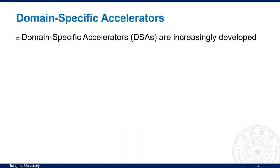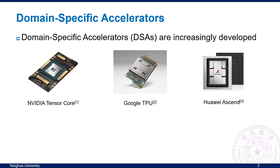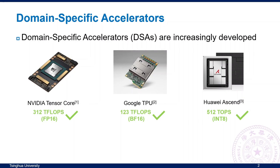In recent years, domain-specific accelerators have developed rapidly. DSAs can provide higher performance by mining the computation patterns of specific domains. For example, some DSAs target the machine learning domain, such as NVIDIA Tensor Core, Google TPU, and Huawei Ascend processors. These DSAs can provide extremely high performance.